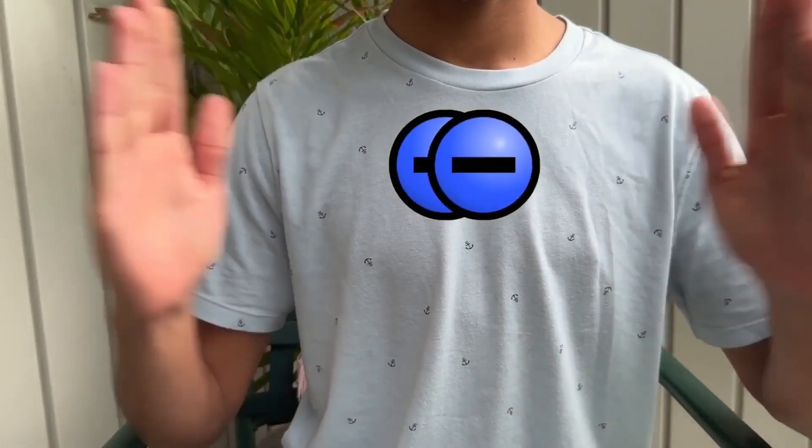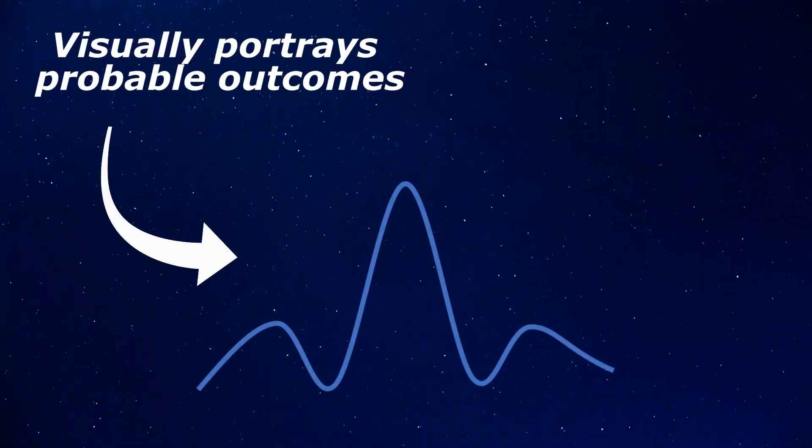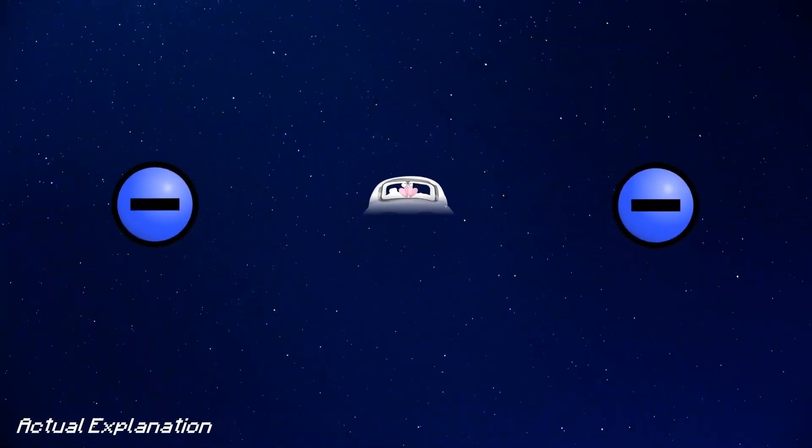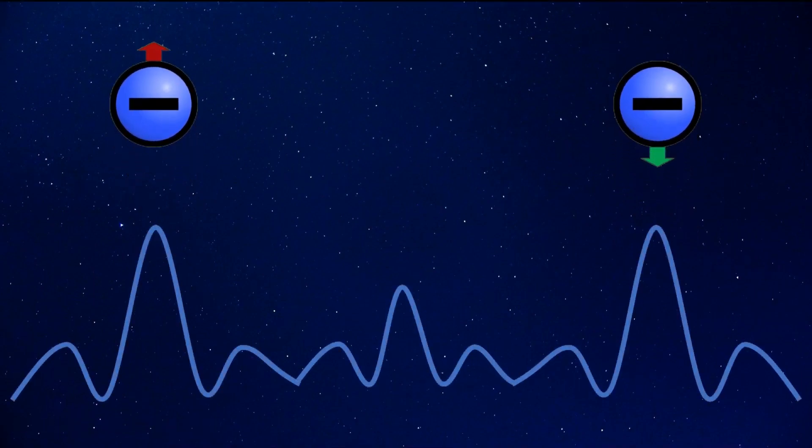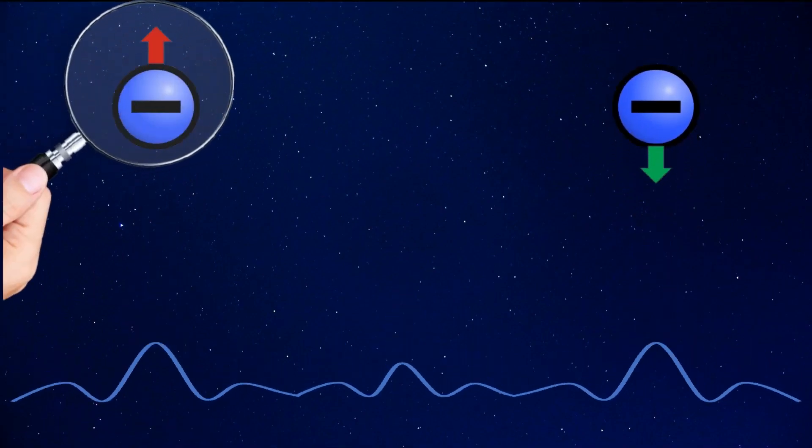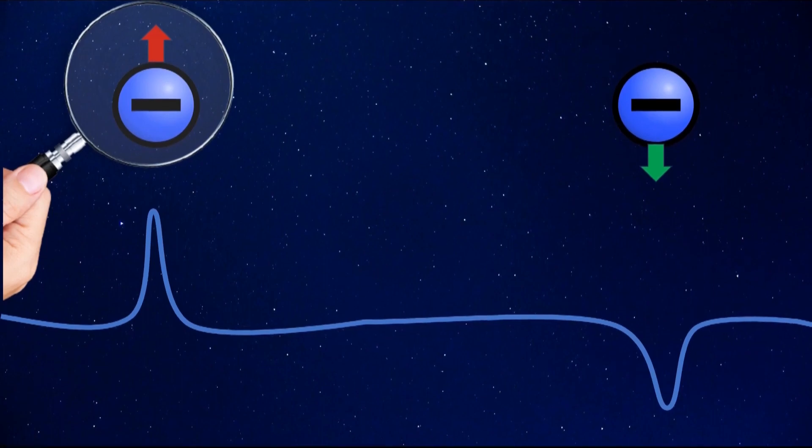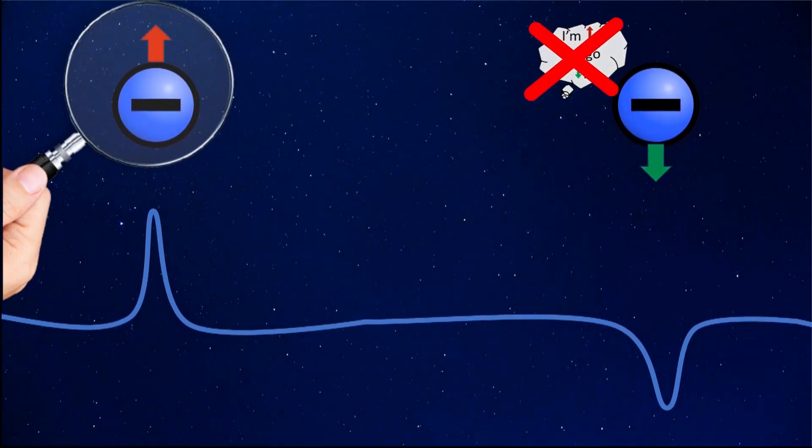Well, particles in superposition are probabilistic, and represented in quantum physics by wave functions. Once entangled, these wave functions mathematically interconnect these particles into one being, meaning a change anywhere in the wave function influences both particles, making communication a fallacy.